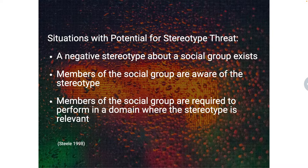The idea of stereotype threat requires three conditions to exist. First, a negative stereotype has to exist about a social group. The members of that social group need to be aware of the stereotype. And then stereotype threat comes into play when the social group members are being asked to perform in an area where the stereotype is relevant.